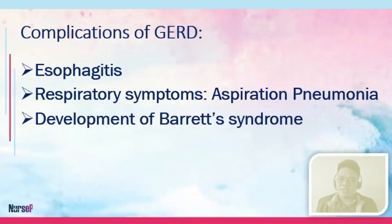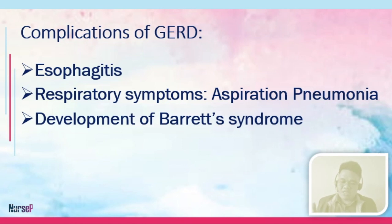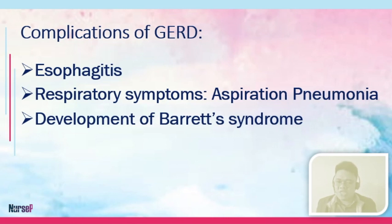What are the possible complications of GERD if it's not treated? You have esophagitis — severe inflammation of the esophagus. Then respiratory symptoms, possibly because of aspiration pneumonia due to the reflux of acid. And then the development of Barrett's esophagus — the esophageal walls change to columnar epithelial cells, making them less effective and comparable to the tissues inside the small intestine. This change is from squamous cells to columnar epithelial cells and is a pre-malignant state.